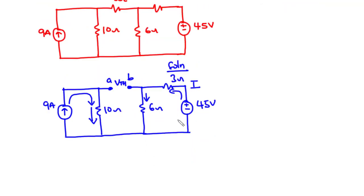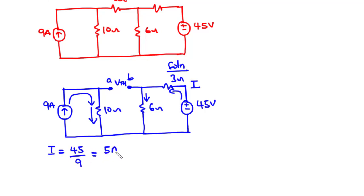To find the value of I, we have I equals 45 divided by (3 plus 6), which is 9. So I equals 5 amperes. Now considering this loop and moving in the anti-clockwise direction, we can find the value of Vth.